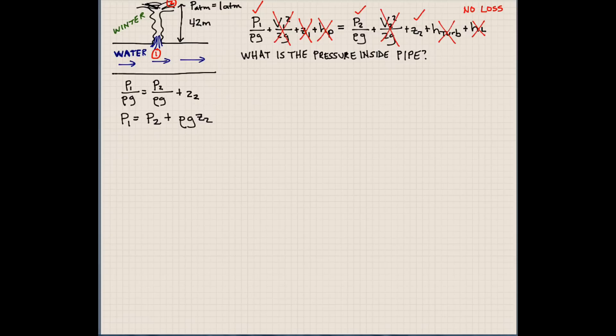So, pressure at one, we don't know. Pressure at two is atmospheric. We'll just say it's 100,000 plus rho, which is 1,000 g, which is 9.81. And the height of this is 42 meters. So, pressure at one, absolute pressure at one is 512 kilopascals. So, this is absolute. What if we wanted to know gauge pressure? Well, we'll just subtract the atmospheric pressure. This would be 412 kilopascals.